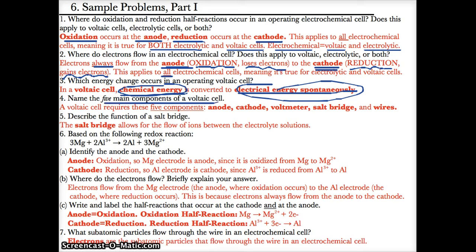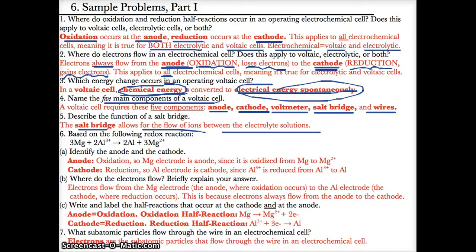The five main components of a voltaic cell are: the anode where oxidation occurs, the cathode where reduction occurs, the voltmeter which measures voltage across the cell, the salt bridge which allows for the free flow of ions, and the wires which allow for electrical current to pass through.